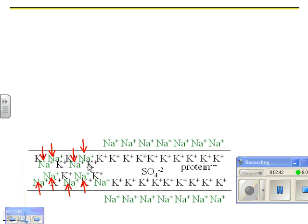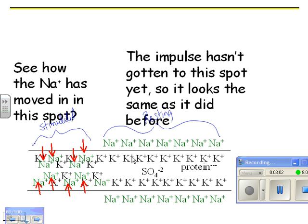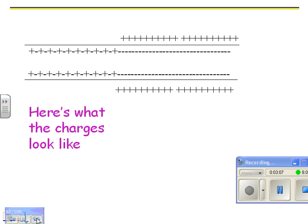Here's a picture of the sodium having just moved in. So this part is stimulated. This whole part is still resting. The impulse has not gotten here yet. See how the sodium has moved in in this spot? Here's what the charges look like. You've got pluses that have moved in here, and they balance out the negatives. So the voltage difference between here and here is really not so great. Whereas over here, the voltage difference between the positive part and the negative part is pretty great.